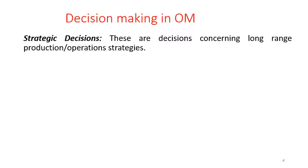We are talking about specific decisions which relate to specific problems. One major classification of decisions is strategic decisions — these are the decisions concerning the long-range production strategies. Every organization has different levels, the most important being the top level which comprises mostly of the promoters, chief executive officer, general manager, president, etc. Designations may vary across organizations.